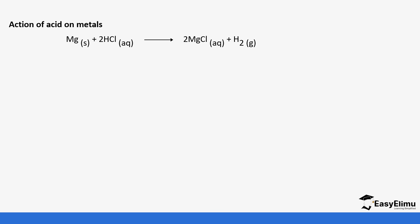Let's take an example. The first thing when you get an equation is to convert it into an ionic equation. Remember, ions that can dissociate are in ionic state and not in solid state — in solid state, ions are in fixed positions. So magnesium remains as it is, then we have two hydrogen ions and two chloride ions. We maintain the coefficient two, which applies to both ions in solution.